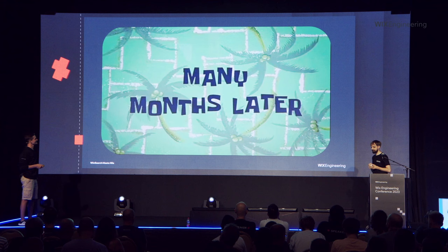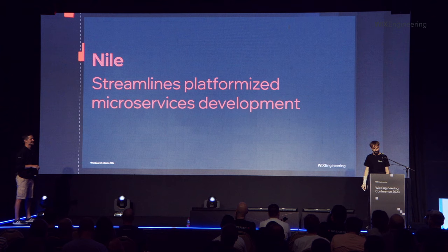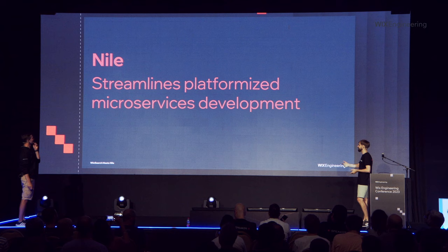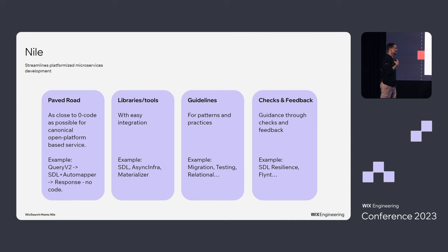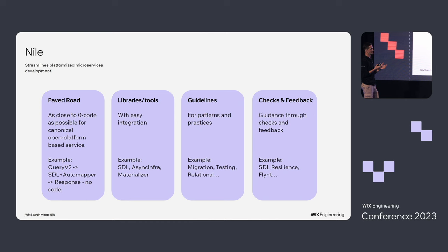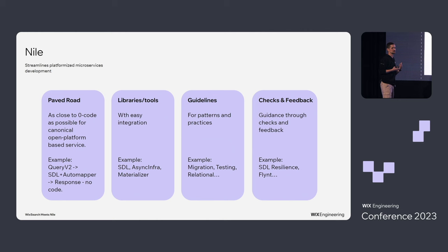What is Nile? Nile streamlines platformized microservice development. When I think about Nile, I think about four main pillars. One is around open platform services APIs — it's about the paved road. We try to provide as close to zero code as possible for developers on the happy paved road path. If you need a deviation, we provide well-integrated libraries and tools so you can expand and still be really productive.